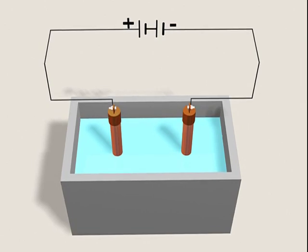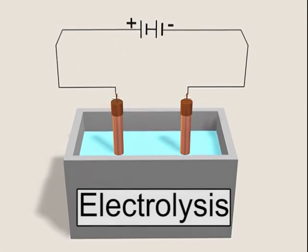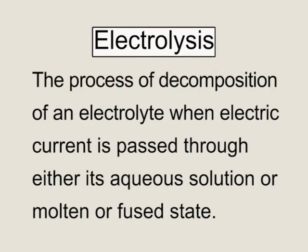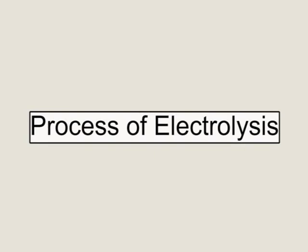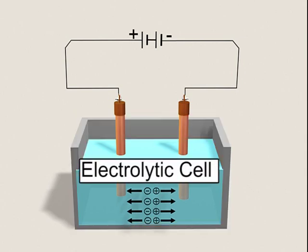Let us now discuss about the process of electrolysis and define it first. Electrolysis may be defined as the process of decomposition of an electrolyte when electric current is passed through either its aqueous solution or molten state. The process of electrolysis is carried out in a vessel made of glass or any other suitable material which is a bad conductor of electricity, called an electrolytic cell.